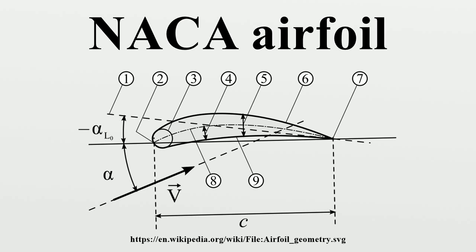Modifications: 4- and 5-digit series airfoils can be modified with a two-digit code preceded by a hyphen. One digit describes the roundness of the leading edge, with 0 being sharp, 6 being the same as the original airfoil, and larger values indicating a more rounded leading edge. One digit describes the distance of maximum thickness from the leading edge in tens of percent of chord. For example, the NACA 1234-05 is an NACA 1234 airfoil with a sharp leading edge and maximum thickness 50% of the chord from the leading edge. All numbers can also be presented as decimals for more precise description.